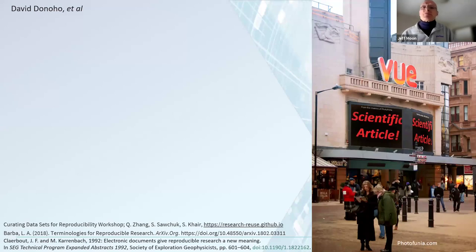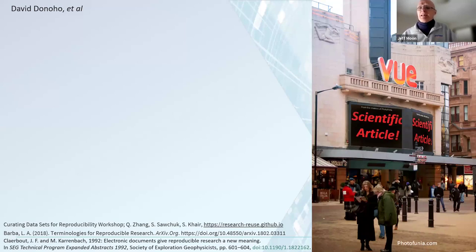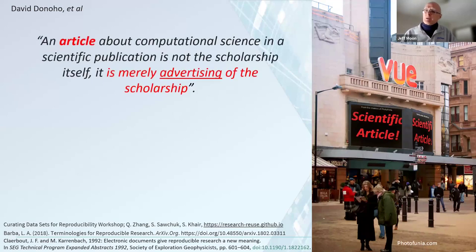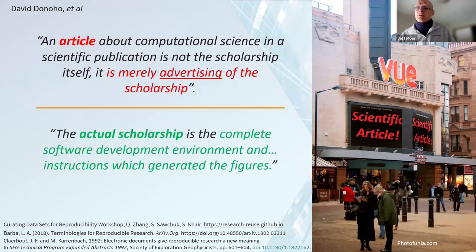David Donoho and others at Stanford University learned of Claerbout's methods in the early 1990s and began adopting and later promoting them. In 1995 these scientists wrote that reproducibility requires having the complete software environment available in other laboratories and the full source code available for inspection, modification, and application under varied parameter settings. They also paraphrased Claerbout's assertion that an article about computational science is not the scholarship itself — it is merely advertising of the scholarship.